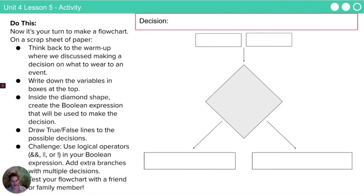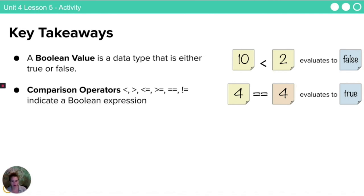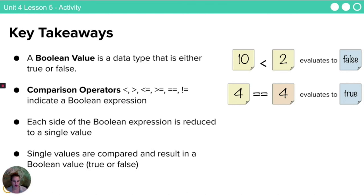Welcome back. I hope you had some flowchart success, and you can see how Boolean values will help with decision making. To wrap up today, I want to give you some takeaways as we think about Boolean decisions. So a Boolean value is a data type that is either true or false. We represented those with blue sticky notes today. A comparison operator, greater than, less than, greater than or equal to, less than or equal to, equal to, or not equal to, indicate that you should evaluate a Boolean expression. When we do this, each side of the Boolean expression is reduced to a single value, and then single values are compared, and the result is a Boolean value, true or false.